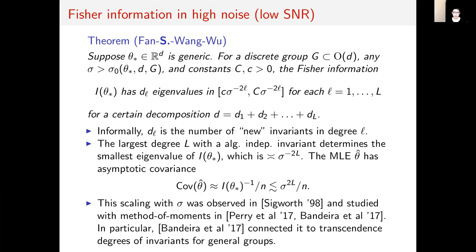Roughly speaking, the number of eigenvalues at scale σ^(-2L) is the number of new invariant polynomials which emerge at degree L. One consequence of this result is that the smallest eigenvalue of the Fisher information lives at scale related to the largest degree of a new algebraically independent invariant polynomial. This allows us to determine the scaling of the covariance of the MLE with the noise. The scaling recovers scaling that was found in previous work in method of moments by Perry and Bender.